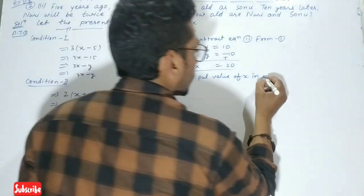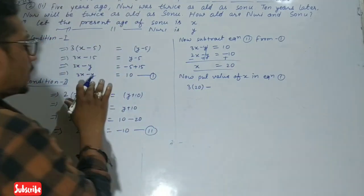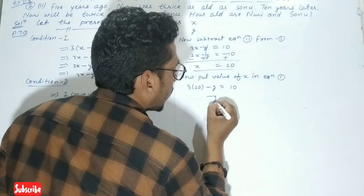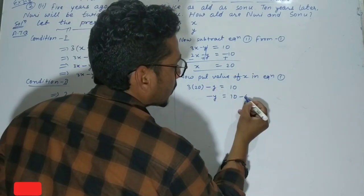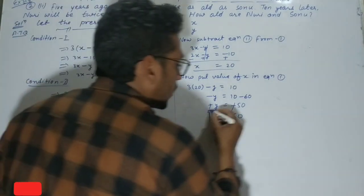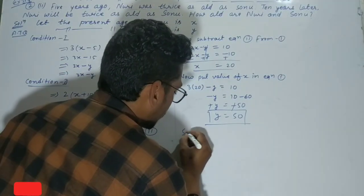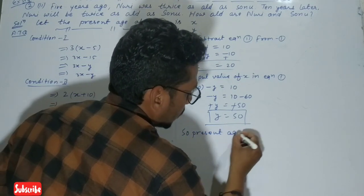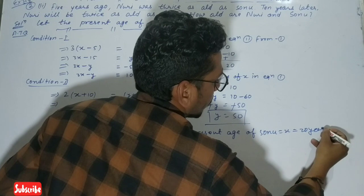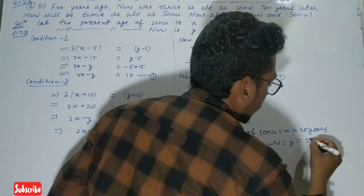Now put the value of x in equation 1. 3(20) - y = 10, so 60 - y = 10. Therefore minus y = -50, and y = 50. So the present age of Sonu is x = 20 years and the present age of Nuri is y = 50 years.